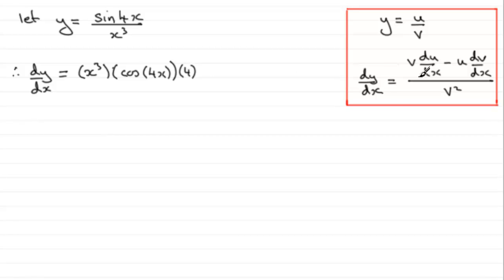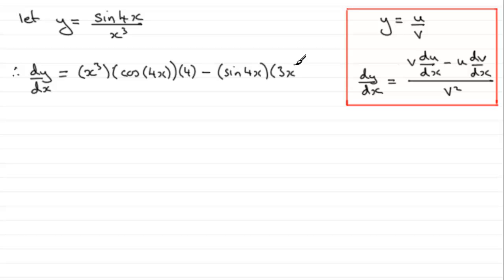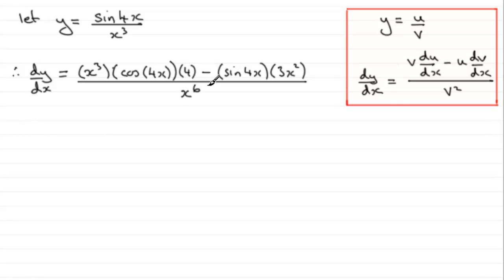Now we do minus, then the top of the fraction times the differential of the bottom. So we have sine 4x in its own bracket, multiplied by the differential of x cubed, which is 3x squared. We divide all of this by the bottom of the fraction squared — x cubed squared is x to the power 6.